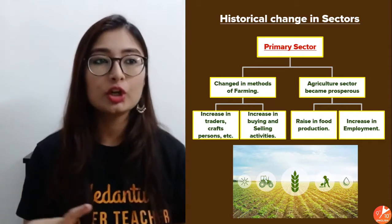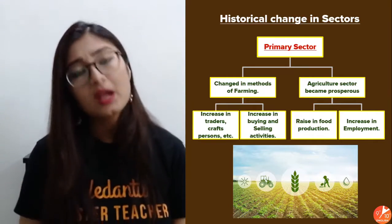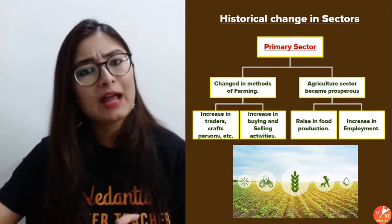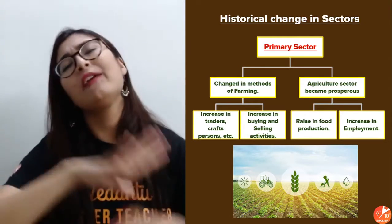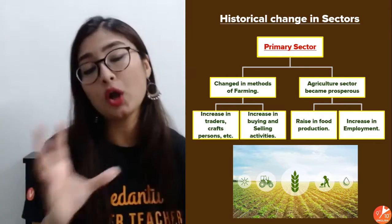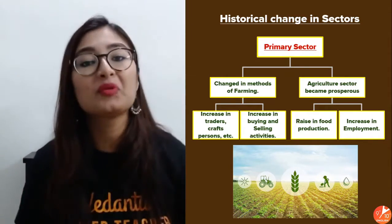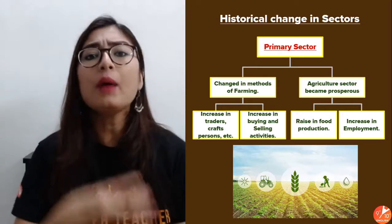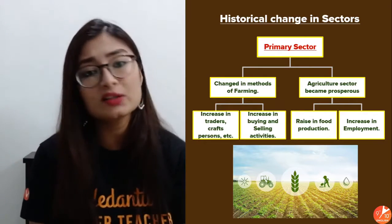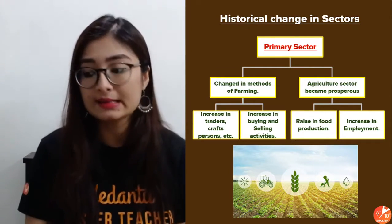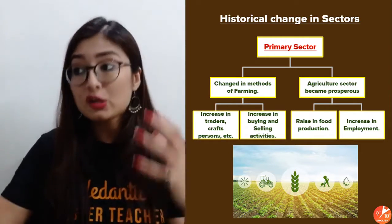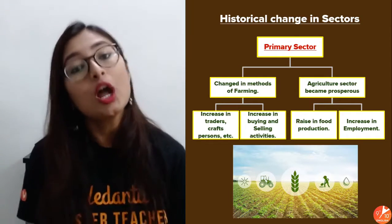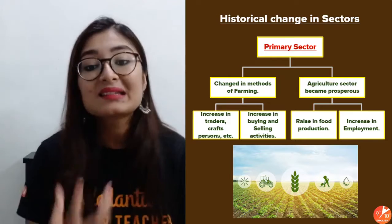A lot of advancement and development has happened in society, which has also promoted development in different fields including the primary sector. Earlier, when people did agriculture, they were completely dependent on natural factors — fertility of land, rainfall, temperature — everything was dependent on nature. If nature betrayed us, the harvest would go down. But now with advancement in technology, all of this has changed. Farming methods have changed: if water is scarce we use irrigation; if land isn't fertile we use fertilizers and manure.